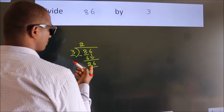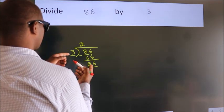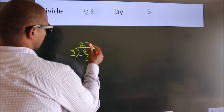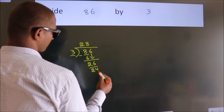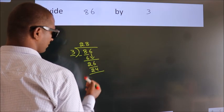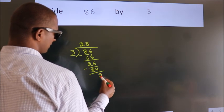A number close to 26 in 3 table is 3 8s, 24. Now we subtract, we get 2.